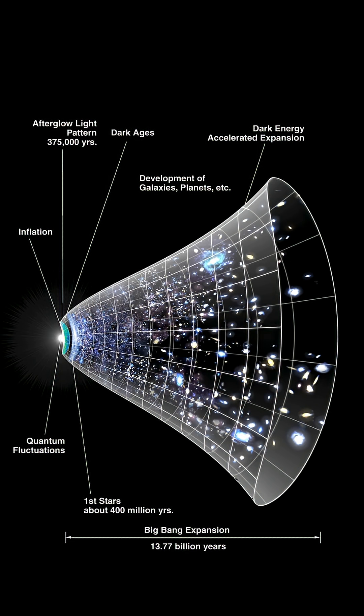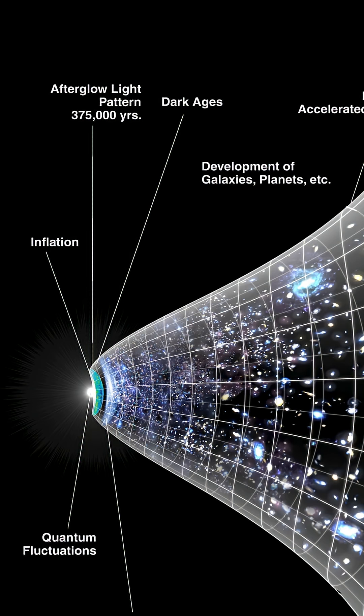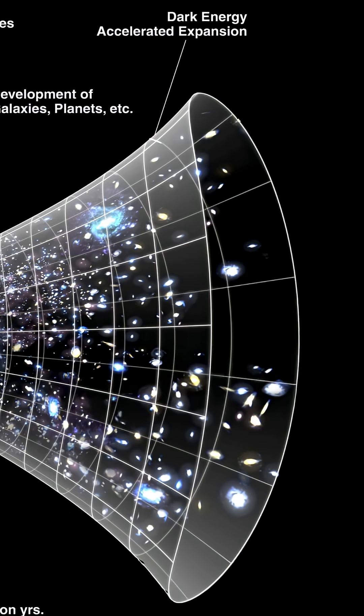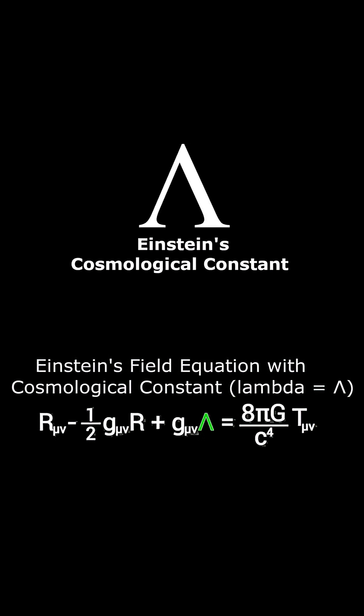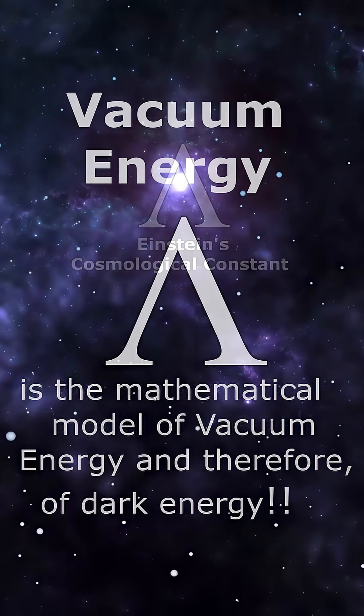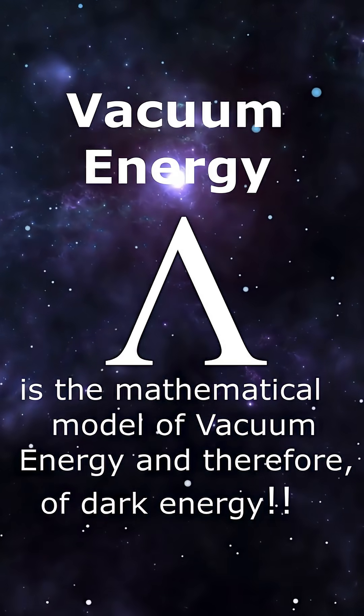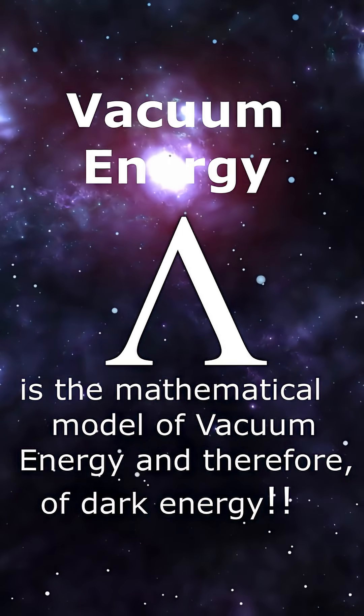But when scientists measure it in the early universe and in the modern one, the numbers don't match. Einstein once added a cosmological constant, a built-in pressure of space itself. Today, we call it vacuum energy and it is observed as dark energy.